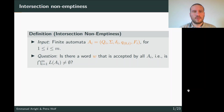In this work we are interested in the intersection emptiness problem: given a list of finite automata A1 to Am, we want to know if there is a word accepted by all automata, which means that the intersection of the languages accepted by all automata is not empty.